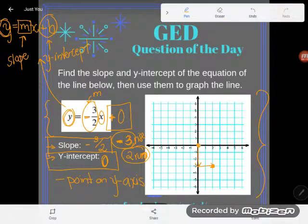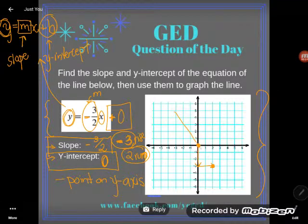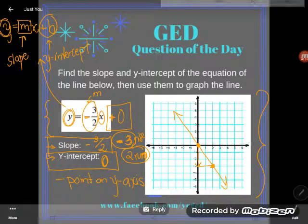So my y-intercept was a point on the y-axis. Then I made the movement from there of my slope and dropped another point. I'll connect them. And that makes a line. All right.